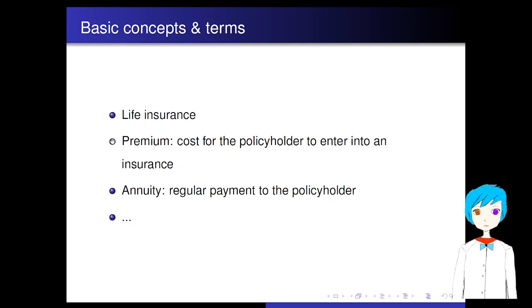There are some basic concepts and terms we will be using throughout this quarter. First, we are mainly discussing life insurance. Life insurance is used against the death of a predetermined life and money will be paid at the death of the life. Premium: premium is the cost for the policyholder to pay to the insurer to enter into an insurance contract. Annuity: annuity is a regular payment to the policyholder. So it's different from life insurance. It's like a pension.